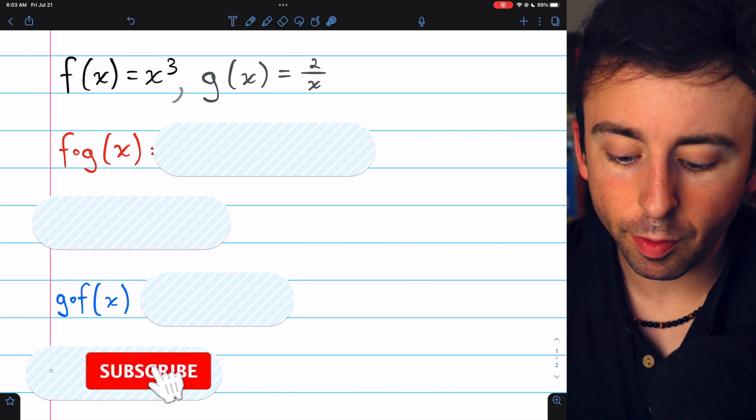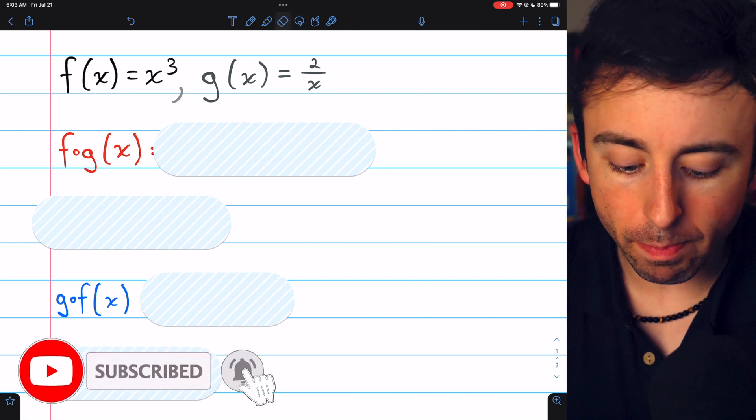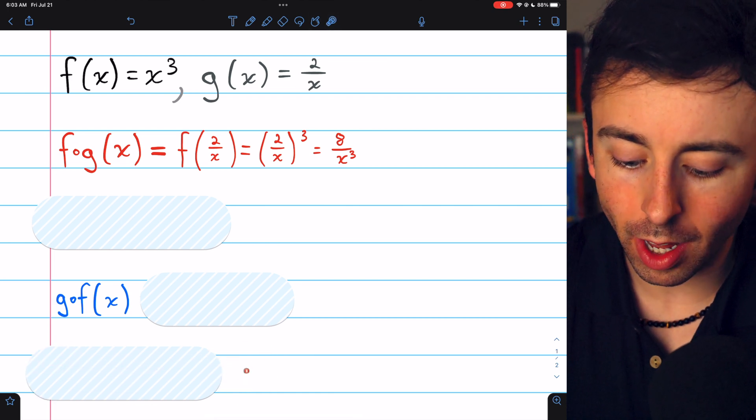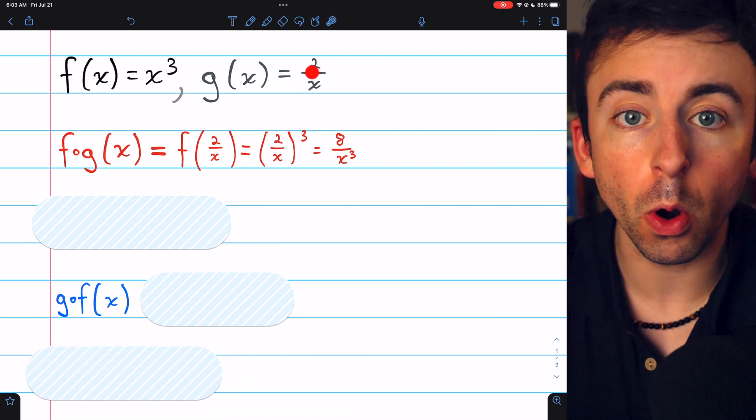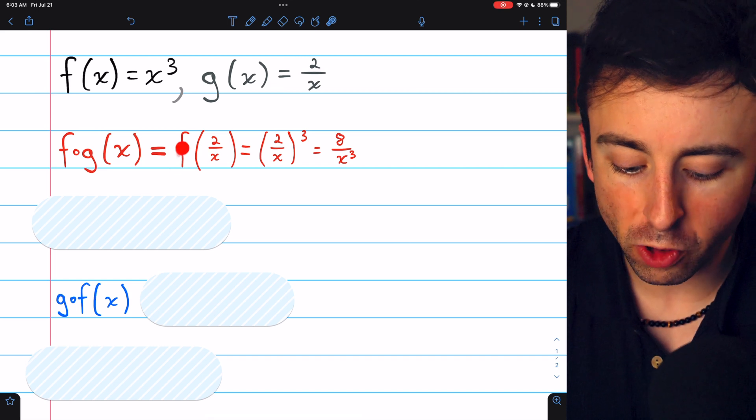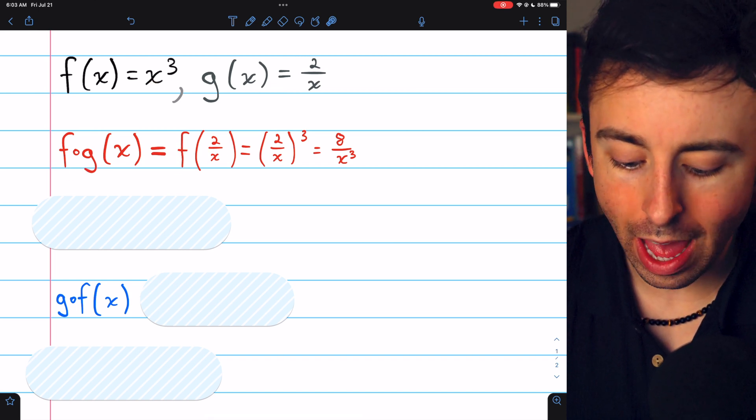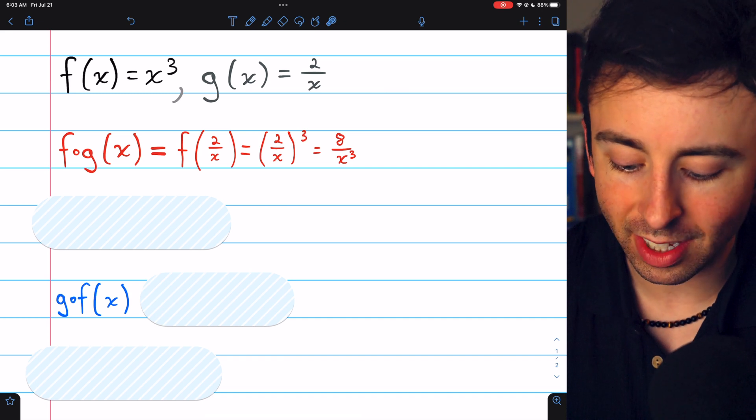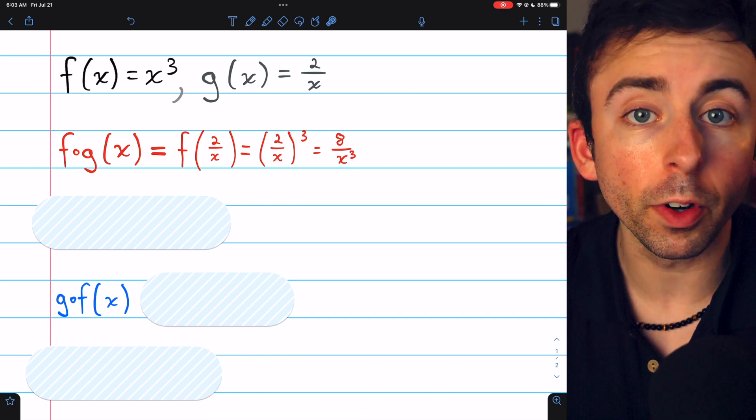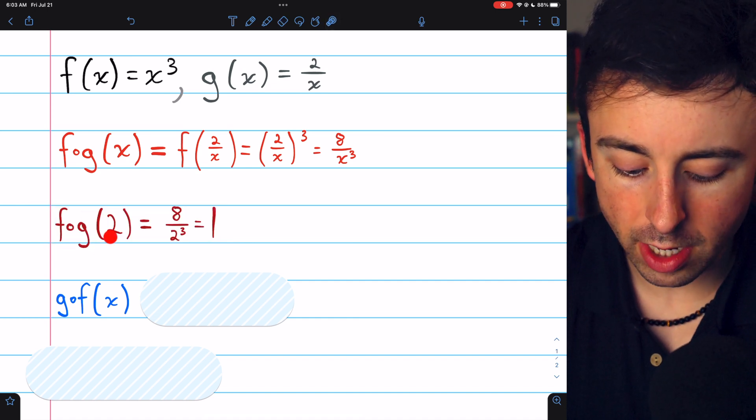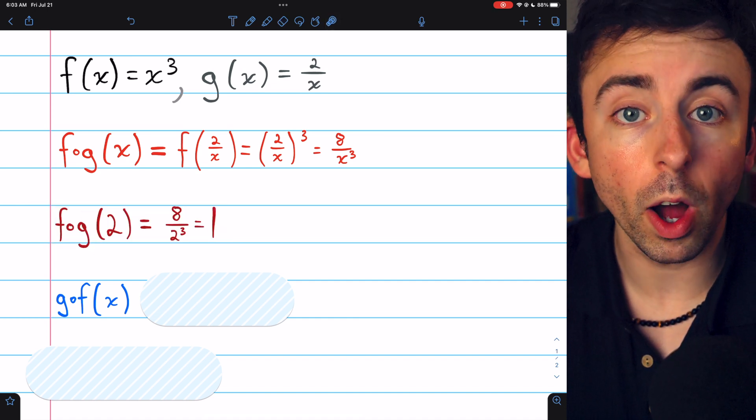Here are two functions, f and g. To find the composite function f of g, we need only plug g, which is 2/x, into the function f. f cubes the input, so f of g is (2/x)³, or 8/x³. This means, for example, that f(g(2)) equals 1.